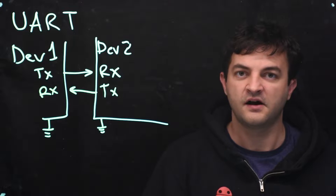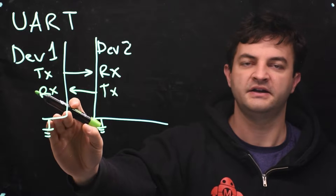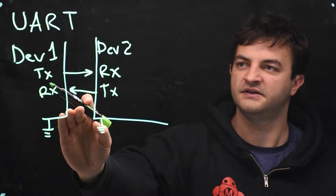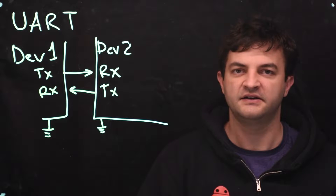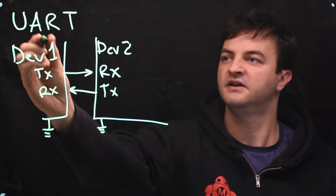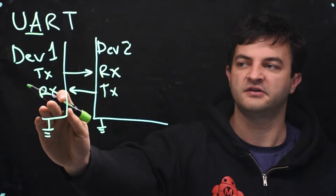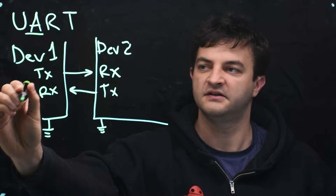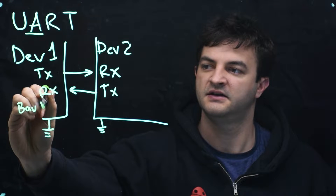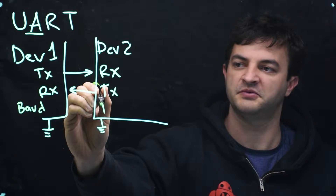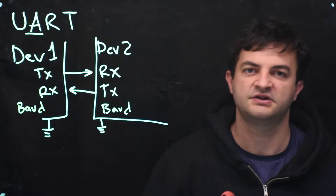What's missing here is a clock line. A clock line might be controlled by device one, and every time the clock changes, device two would know to read the transmit from device one. Instead, this is asynchronous communication — the A is very important — and that means device one is going to be programmed to send the bits at a certain baud rate, or bits per second. Device two is also going to be programmed to read and transmit the data at a baud rate, and those baud rates have to match.